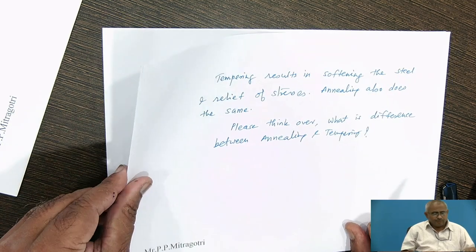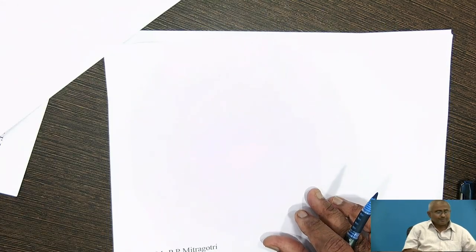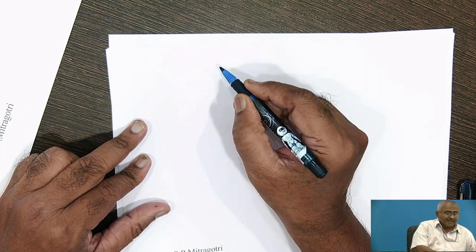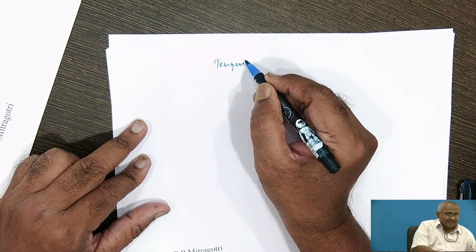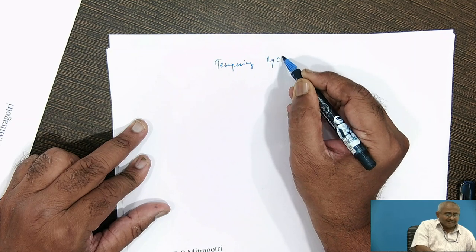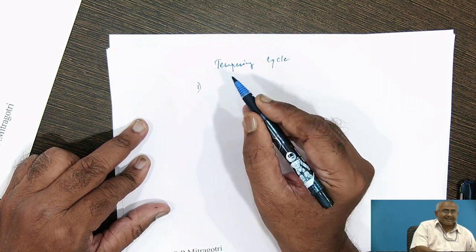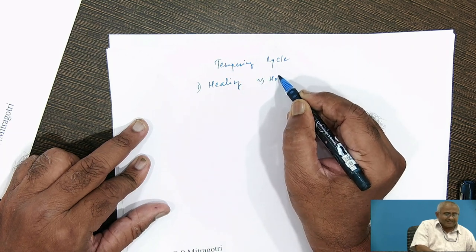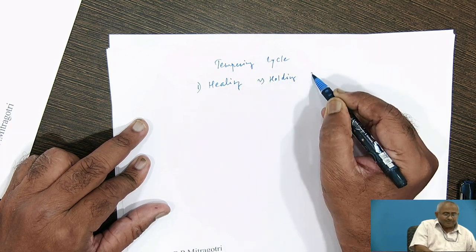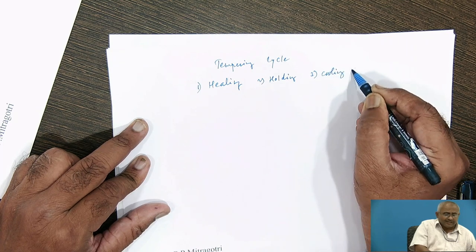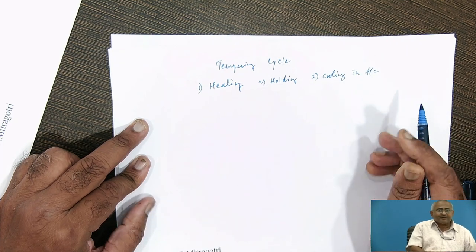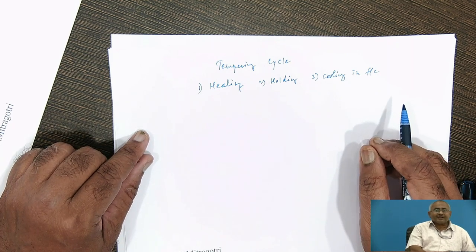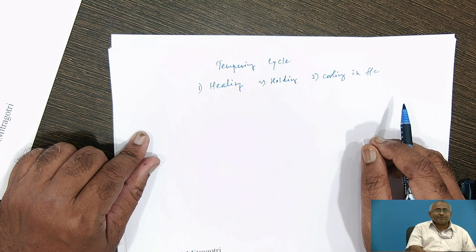We will now go over the types of tempering and the tempering cycle. In the tempering cycle, there are three stages: first is heating, second is holding, and third is cooling in the furnace — that is, slow cooling. Slow cooling is very essential because during cooling, stresses should not again get introduced in the steel being tempered.